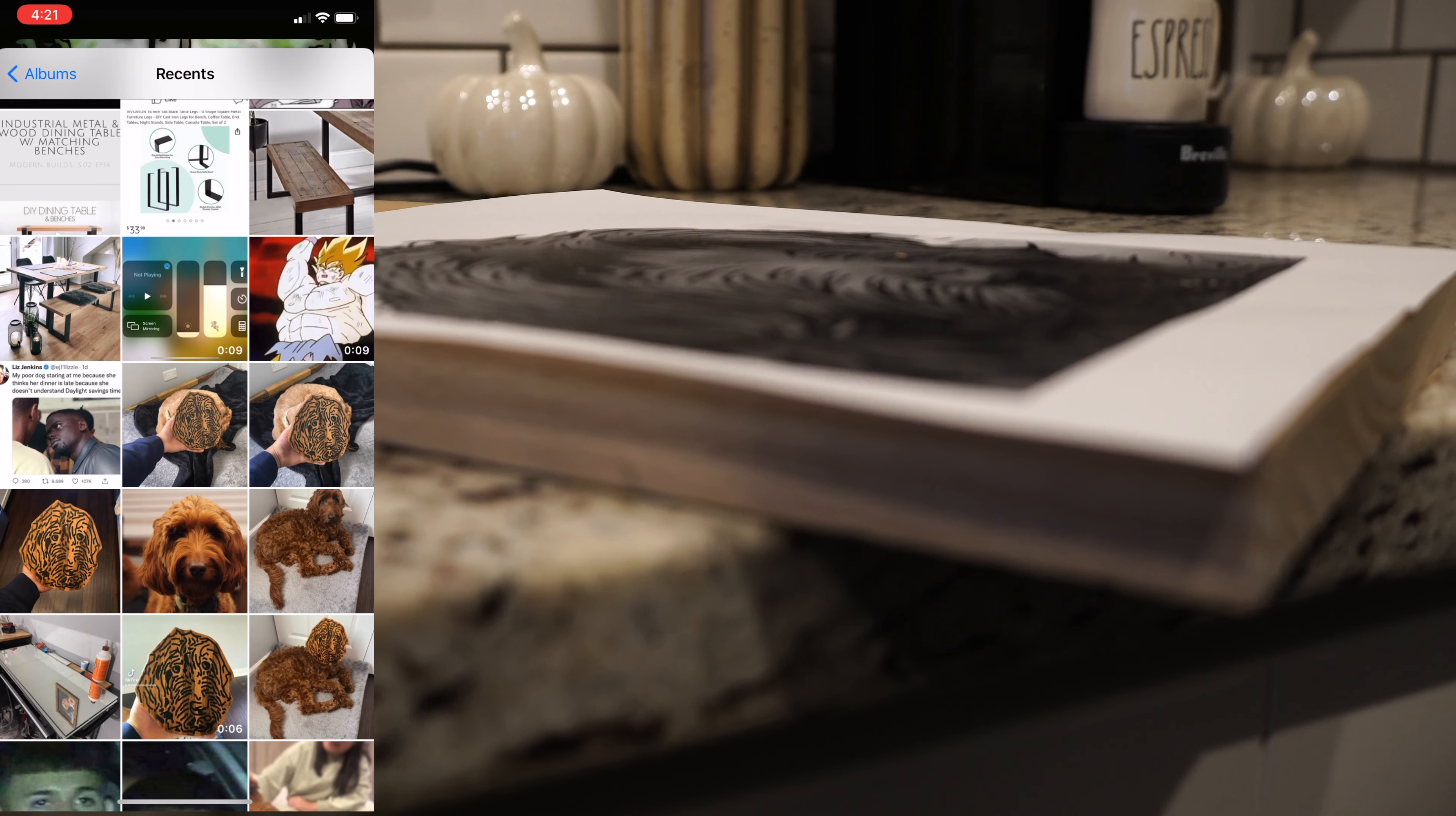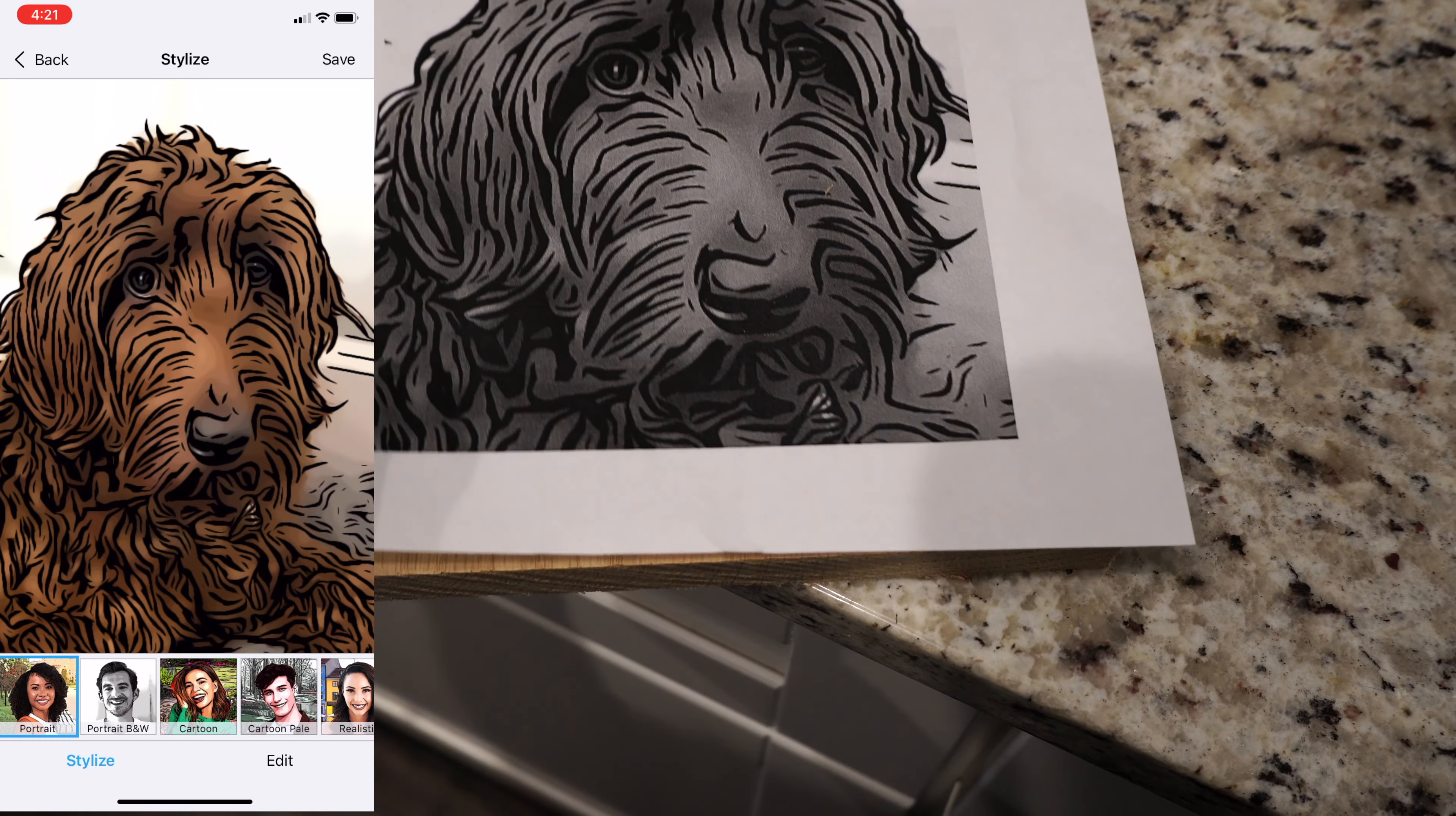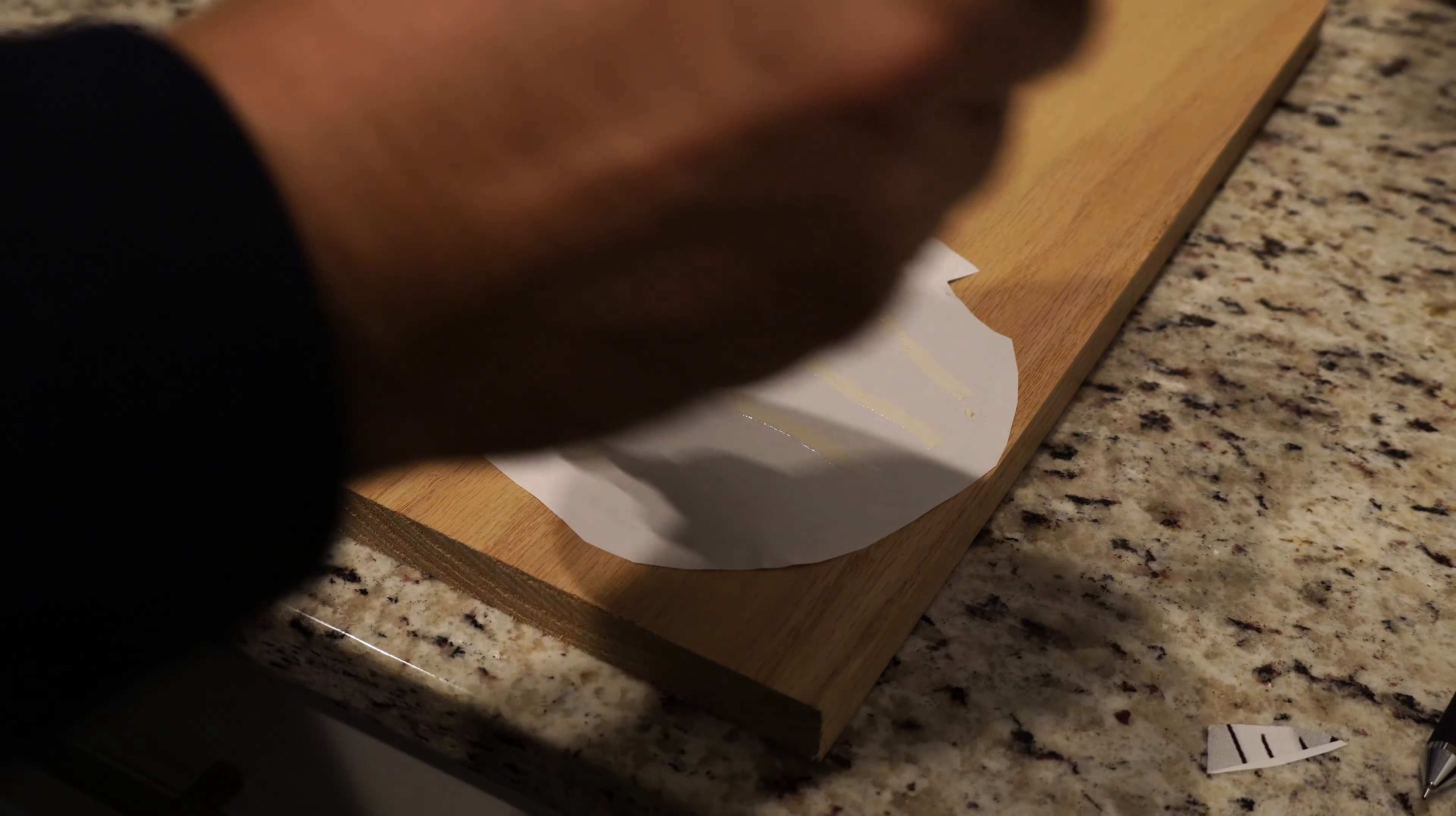From there I just selected a picture that would show my dog's face. Then I printed that image and it would be the template for our project. I cut out the general shape and then attached this picture to my wooden board using a thin layer of wood glue.